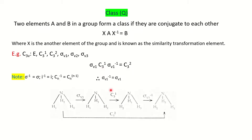Now we perform C3¹, which means one rotation of 120 degrees (360°/3). H1 goes to the position of H3, H3 comes to the position of H2, and H2 goes to the position of H1. After performing C3¹ we then perform σV1⁻¹, which equals σV1. The plane remains the same, so H2 stays constant because it is on the σV1 plane, while H3 and H1 interchange their positions.